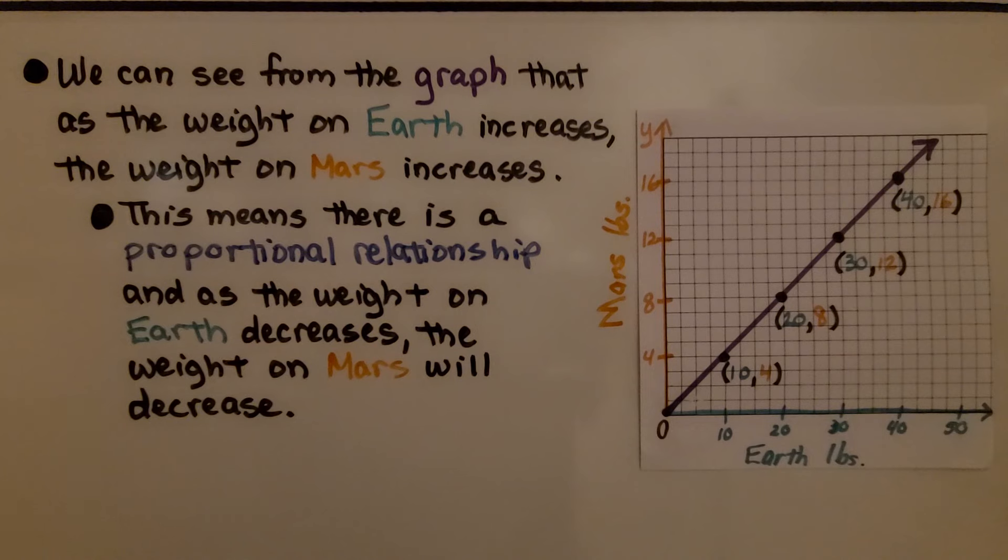We can see from the graph that as the weight on Earth increases, the weight on Mars increases. This means there's a proportional relationship, and as the weight on Earth decreases, the weight on Mars will decrease.